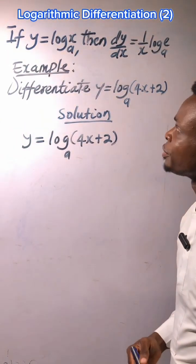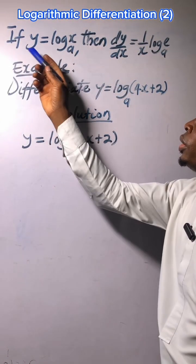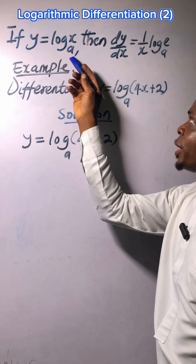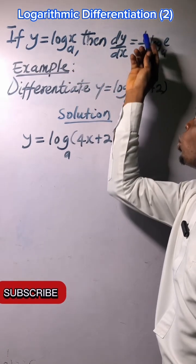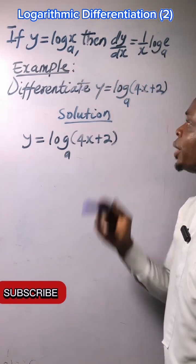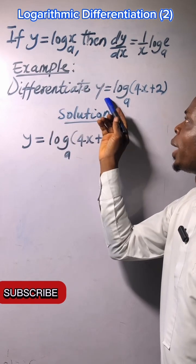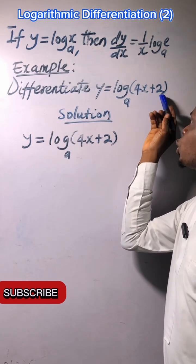Let's learn the second logarithmic differentiation. If y equals log x in base a, then dy/dx equals one over x times log e in base a. Example: differentiate y equals log base a of (4x + 2).